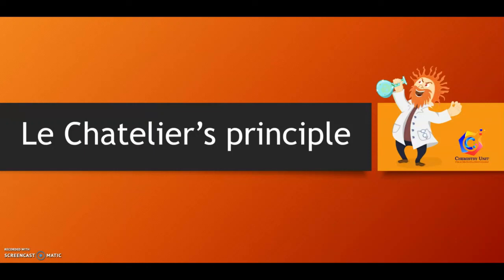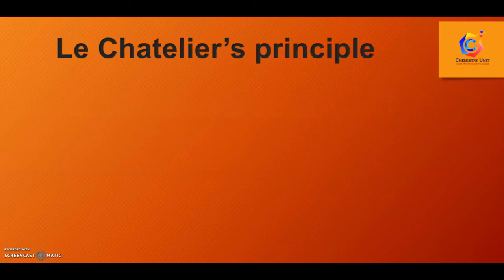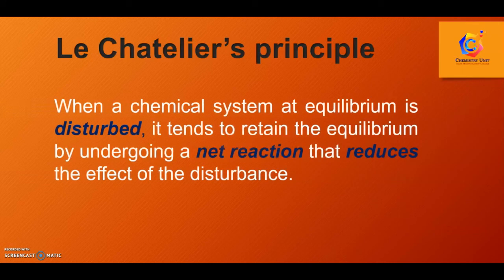Hello everybody. Today we are going to learn a principle in chemical equilibrium known as Le Chatelier's principle. Le Chatelier's principle states that when a chemical system at equilibrium is disturbed, it retains equilibrium by undergoing a net reaction that reduces the effect of the disturbance.